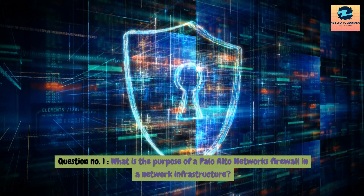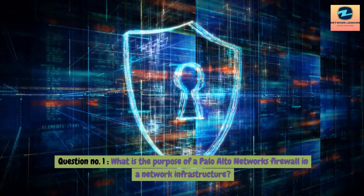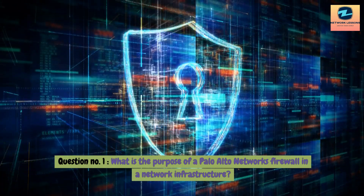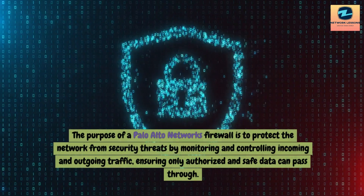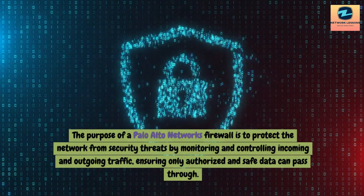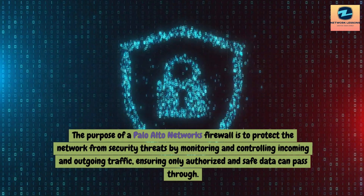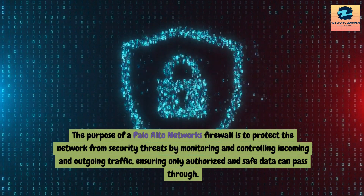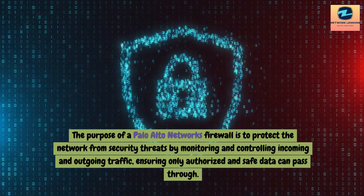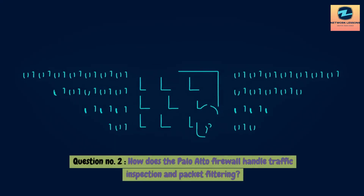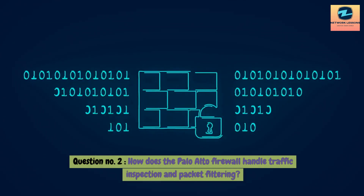Question 1: What is the purpose of Palo Alto Networks firewall in a network infrastructure? Answer: The purpose of Palo Alto Networks firewall is to protect the network from security threats by monitoring and controlling incoming and outgoing traffic, ensuring only authorized and safe data can pass through.